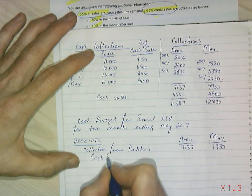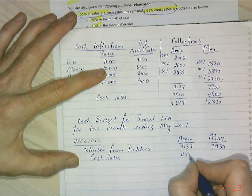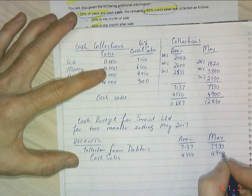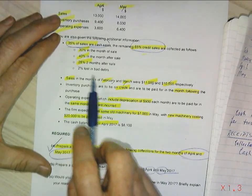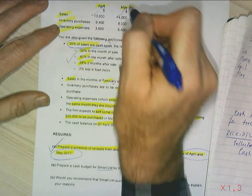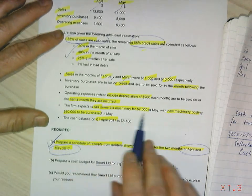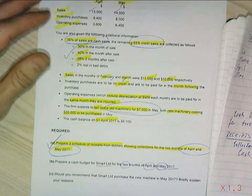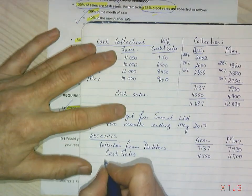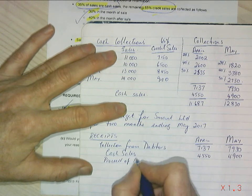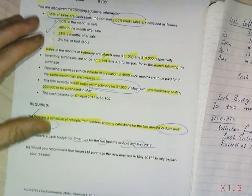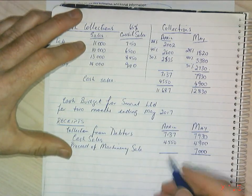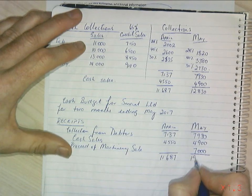Cash sales were 4,550 for April and 4,900 for May. Scanning for any other receipts — here we go: sale of old machinery in May for 7,000. So I'll include proceeds of machinery sale as 7,000 in May. There was nothing else, so now I can total my receipts: April total is 11,687, and May total is 19,830.